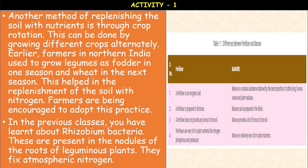Differences between fertilizers and manure: A fertilizer is an inorganic salt, whereas manure is a natural substance obtained by decomposition of cattle dung, human waste, or plant residues. A fertilizer is prepared in factories, whereas manure can be prepared in the fields. A fertilizer does not provide any humus to the soil, whereas manure provides a lot of humus. Fertilizers are very rich in plant nutrients like nitrogen, phosphorus, and potassium, whereas manure is relatively less rich in plant nutrients.